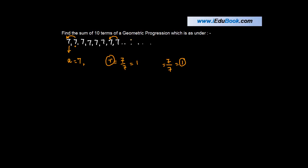You might wonder: if it's a geometric progression with r = 1, why bother with a formula? You could simply add 7 ten times and get 70. The idea here is to show what happens when the common ratio is 1 — and it need not necessarily be 7 repeated; it could be any number, as we'll see next.